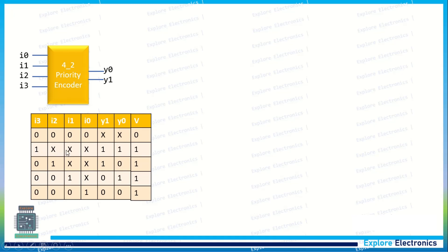When i3 is equal to 1, the lower priority inputs i2, i1, i0 can be taken as don't care. Why? Because even if these are 1 or 0, it will not matter. So when i3 is the highest priority, when i3 is equal to 1, the encoded output will be 1, 1.